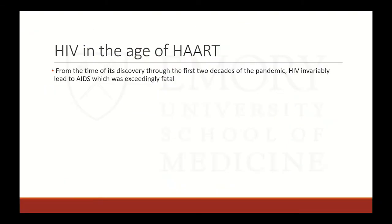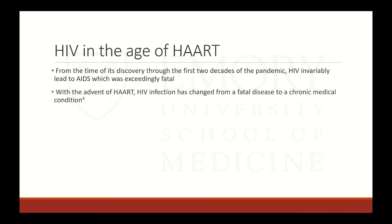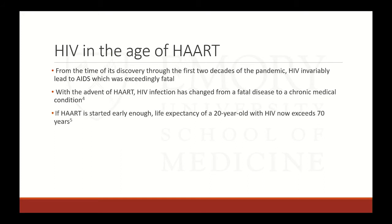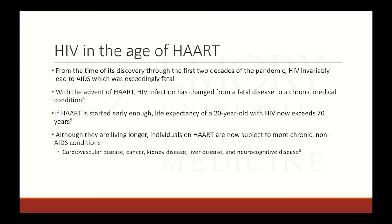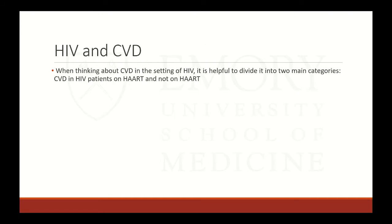From the time of its discovery through the first two decades of the pandemic, HIV invariably led to AIDS, which was exceedingly fatal. With the advent of HAART, HIV has changed from a fatal disease to more of a chronic medical condition. If HAART is started early enough, the life expectancy of a 20-year-old with HIV now exceeds 70 years. Although they're living longer, individuals on HAART are now subject to more chronic non-AIDS conditions — importantly cardiovascular disease, but also cancer, kidney disease, liver disease, and neurocognitive disease.